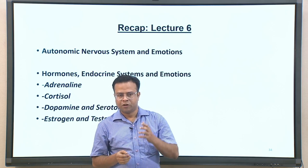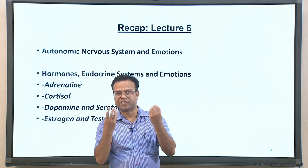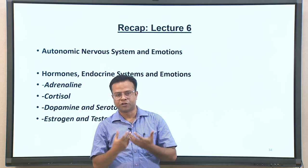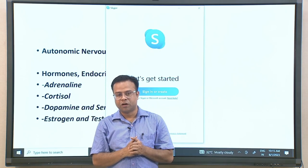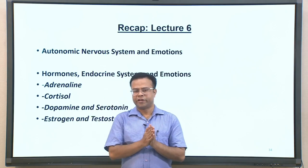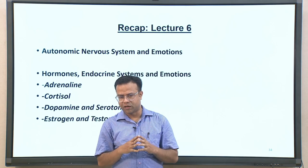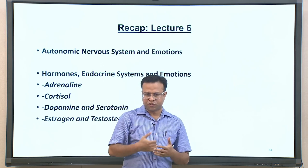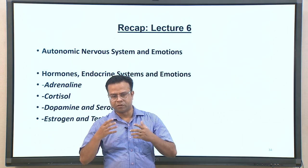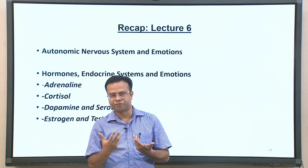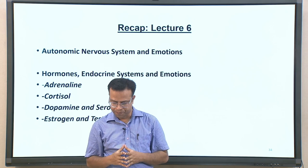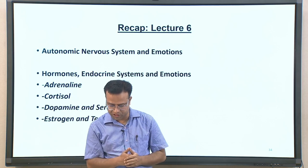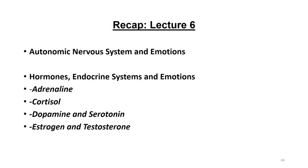Adrenaline and cortisol are mostly related to stress, anxiety, and distress — preparing the body to fight or deal with a situation by giving extra energy and increasing heart rate. There are certain differences in the pathways through which adrenaline and cortisol are released. Dopamine and serotonin are also called happy hormones, primarily associated with positive mood.